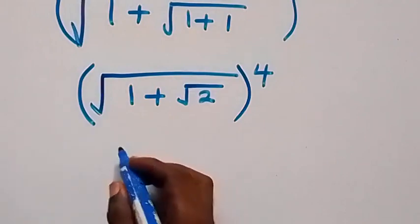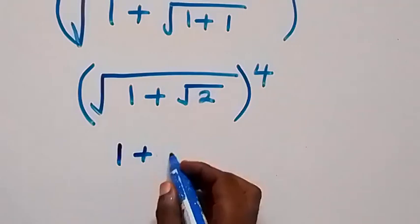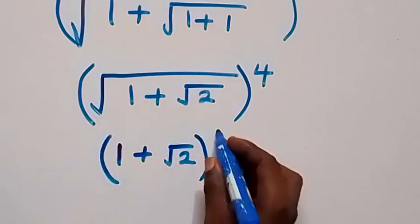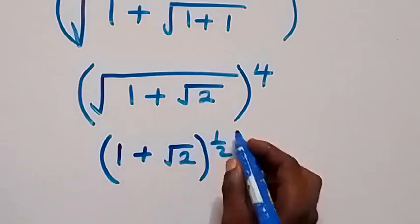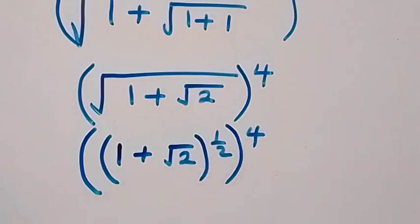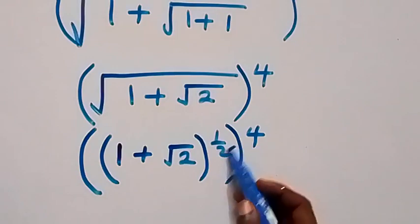Square root here we can write as raised to power half, so we have 1 plus root 2 raised to power half, that square root, then raised to power 4 here. From the law of indices, this power will multiply, so half times 4 is 2. This now becomes 1 plus root 2 raised to power 2.